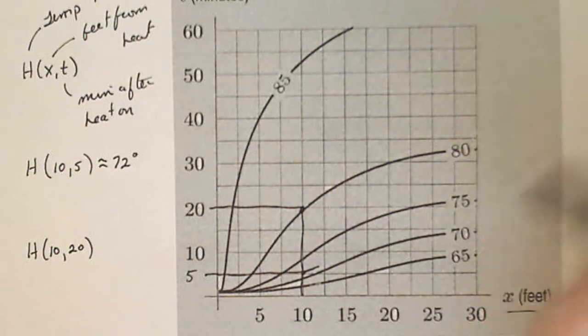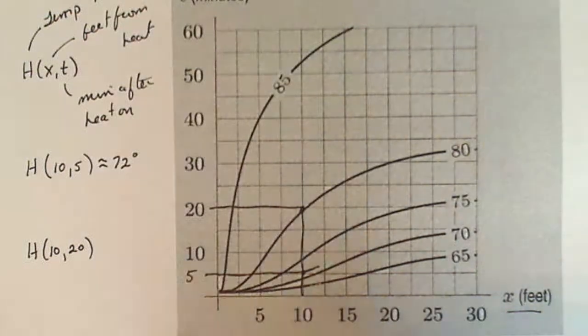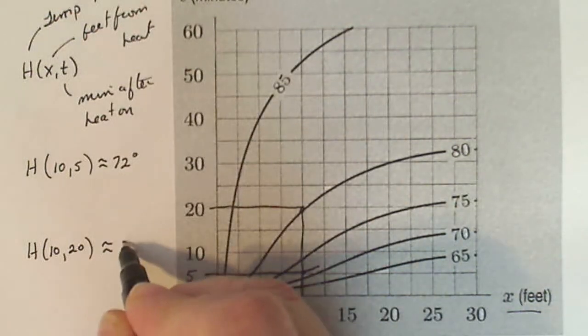So it's pretty close to being on that contour. So I would say H of 10,20 is about 80 degrees.